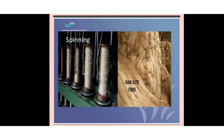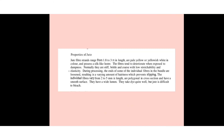Some properties of jute fiber: the fibers range from 1.8 to 3 meters in length and are generally pale yellow to yellowish-white in color with a silky luster. The fibers tend to deteriorate when exposed to damp conditions, and have steep bite and coarseness with low stretchability and elasticity. Individual fibers vary from 2 to 5 millimeters in length, are polygonal in cross-section, have a smooth surface, and a wide lumen.